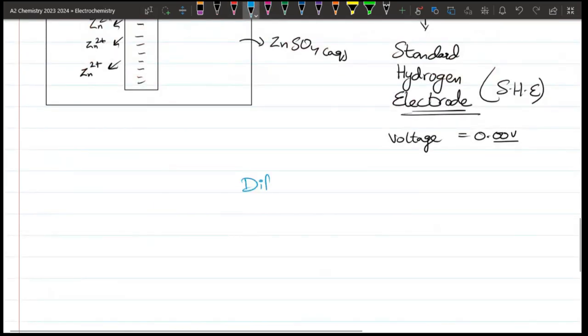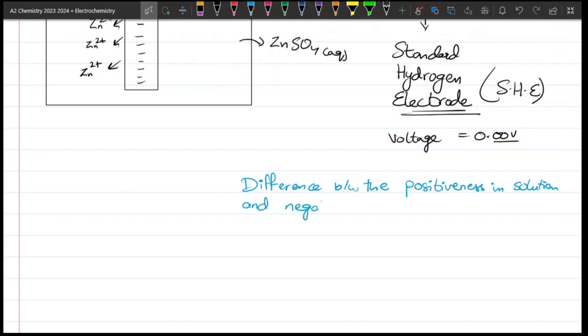The potential difference is the difference between the positiveness in solution and negativeness on metal. It's called potential difference.